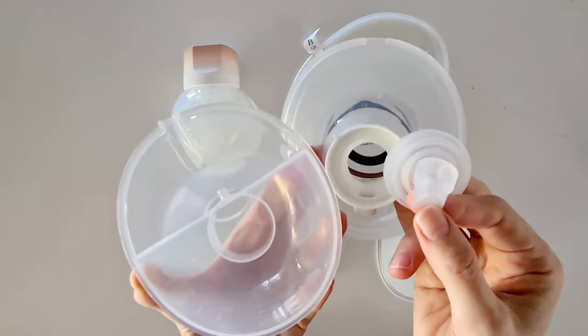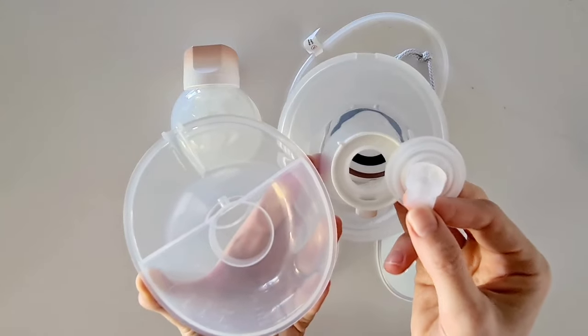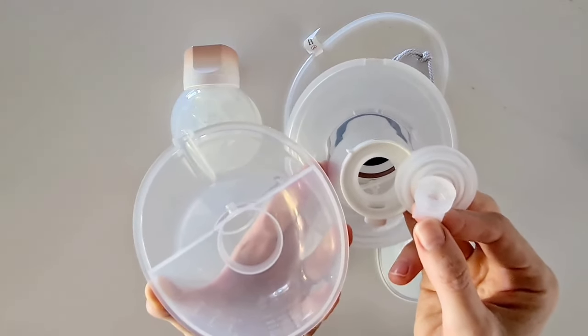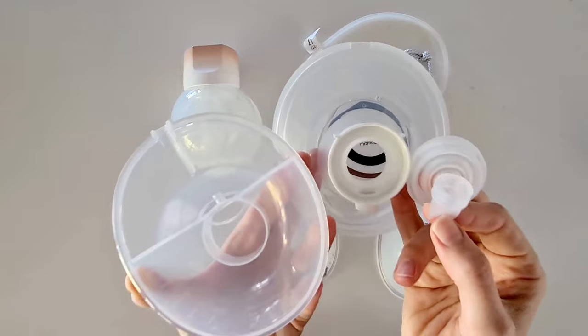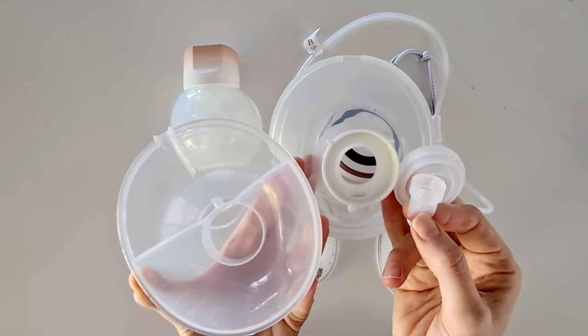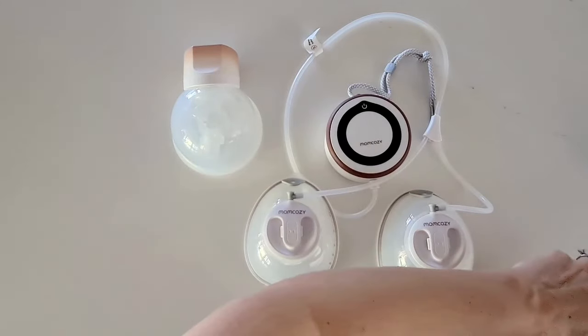These are the parts that we need to disassemble and then place in our warm soapy water after we have rinsed those. For now all you need to know is you need to find the parts that have come into contact with the breast milk and pull them apart.